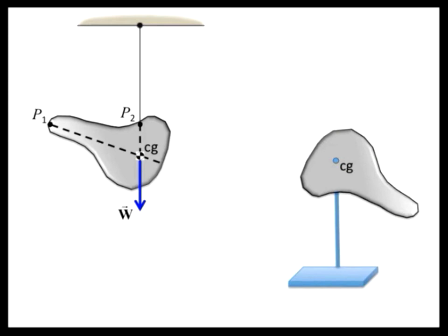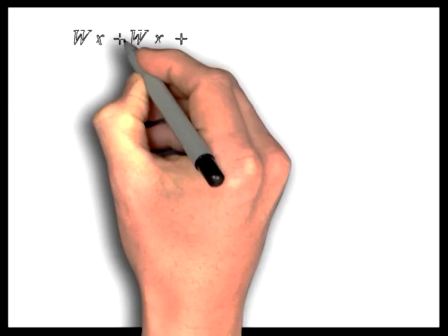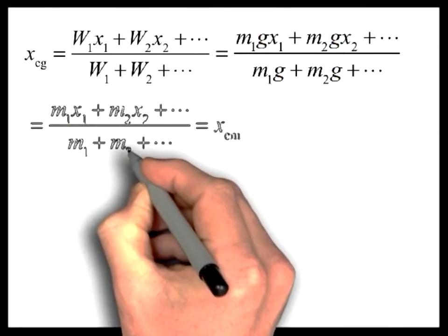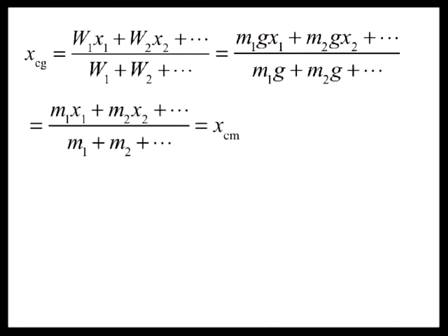One final note on the center of gravity. If we eliminate g from each weight term in the numerator and denominator in our expression for the location of the center of gravity derived earlier, the resulting equation is exactly the same as equation 7.10, which represents the location of the center of mass of a system. In fact, the location of the two points is identical.